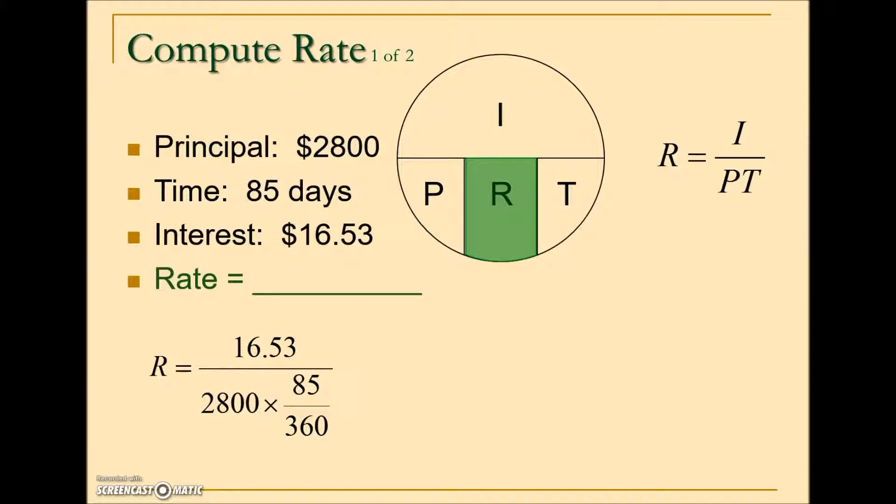This is no different than the previous problem solving for principal as far as how you're going to simplify it. You can choose to simplify the denominator and then take the numerator divided by that simplified value, or use parentheses and do this in all one continuous calculation. Either way, we should end up with a value that looks like this.